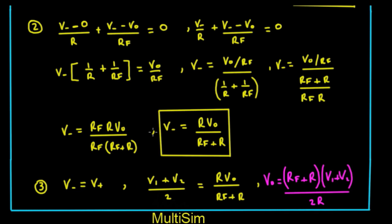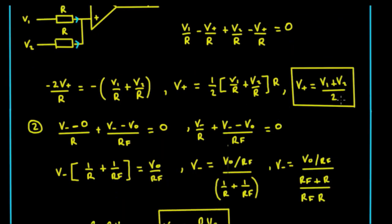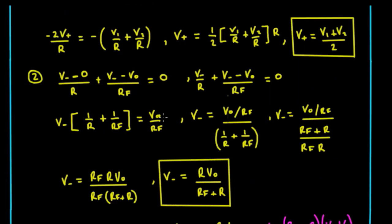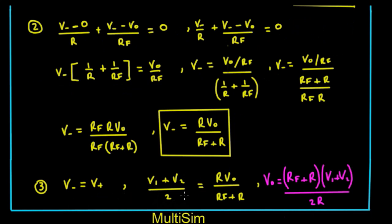Now finally we've worked out our voltages at v_plus and v_minus, and we know from the golden rules that v_plus must equal v_minus. So this here must equal this up here. That's us rewritten it there, and then we solve this for v_out. So v_out equals (rf + r)/(2r) times (v1 + v2).